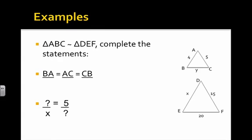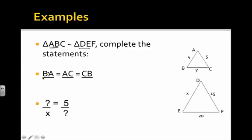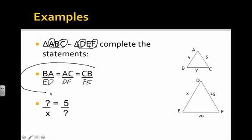We are told that triangle ABC is similar to triangle DEF and need to complete the following statements. Remember, if two figures are similar, their sides are proportional. We don't even need to look at the figure to set up our proportion statements. BA is proportional to ED, and they have the same ratio as AC to DF — using the first and third letters in order. Then CB has the same ratio as FE. This is our proportionality statement.